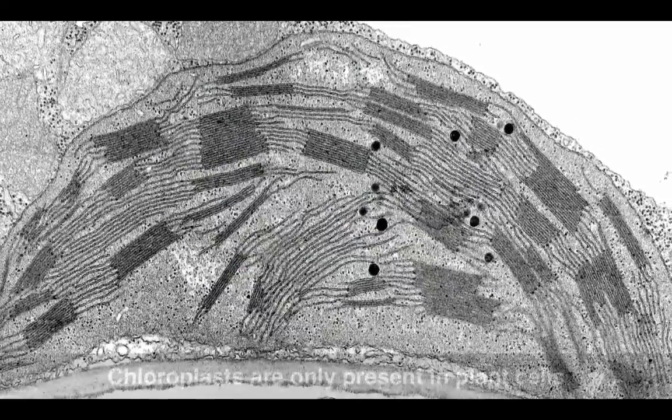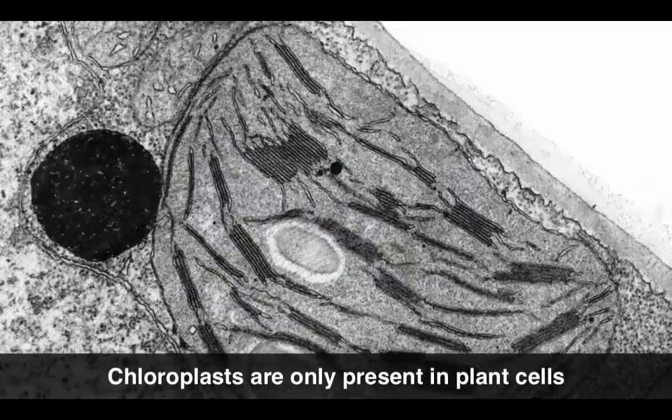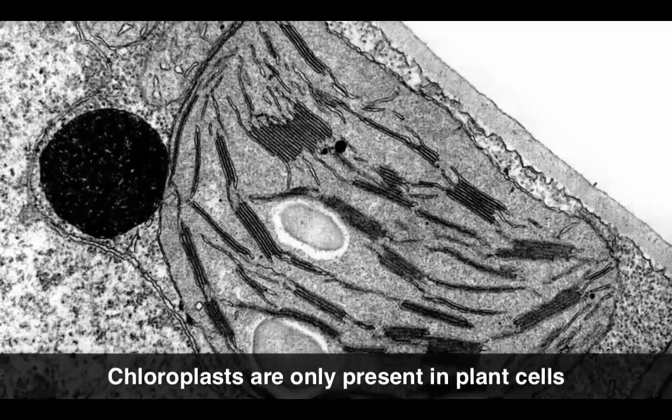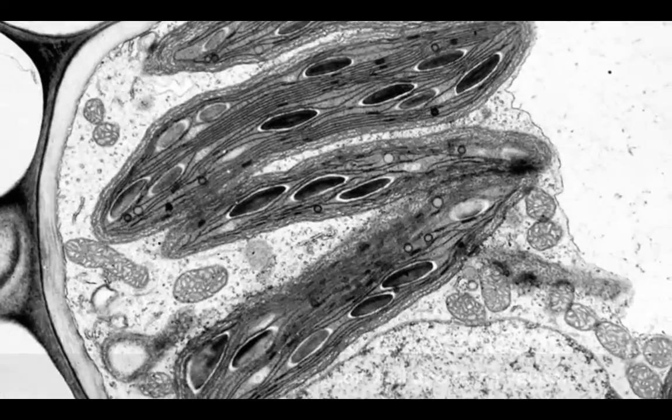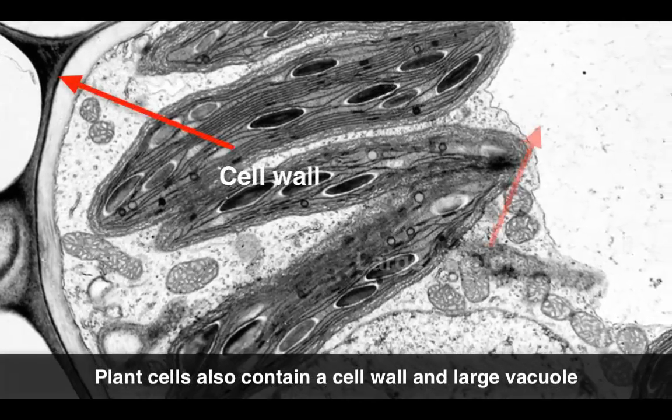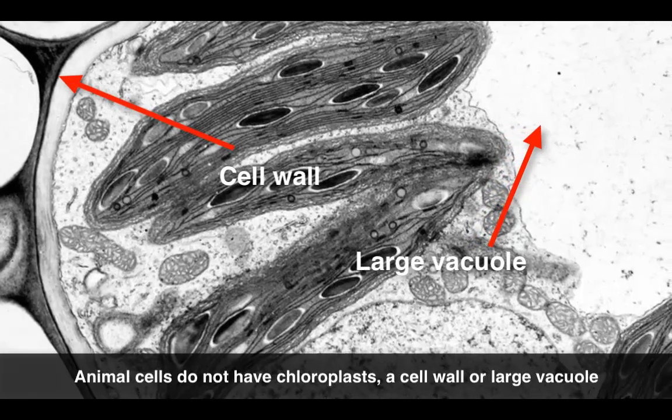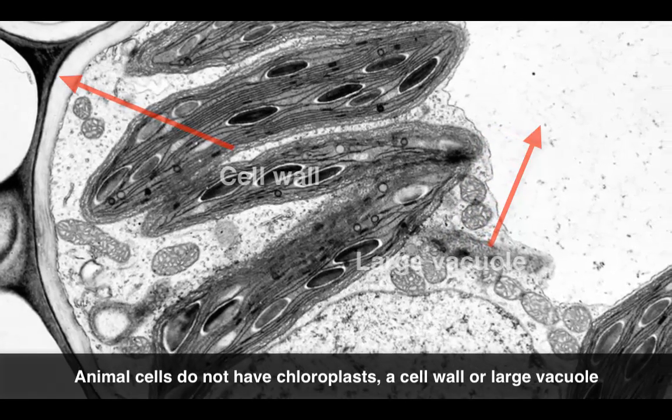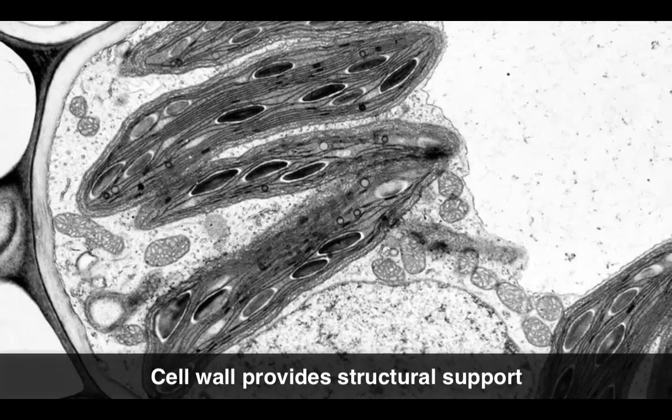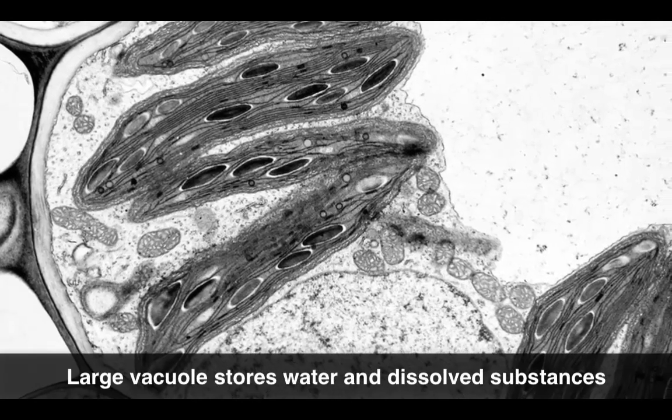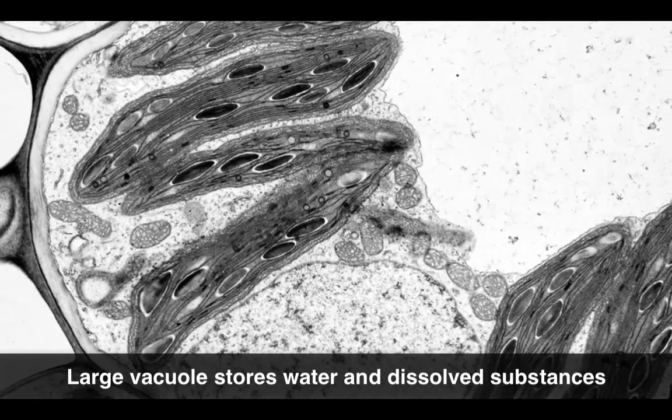Identification of chloroplasts as one of the organelles present allows you to identify this cell as a plant cell. Plant cells also have a cell wall and a large vacuole, but animal cells have none of these three organelles. The cell wall provides structural support while the large vacuole stores water and dissolved substances.